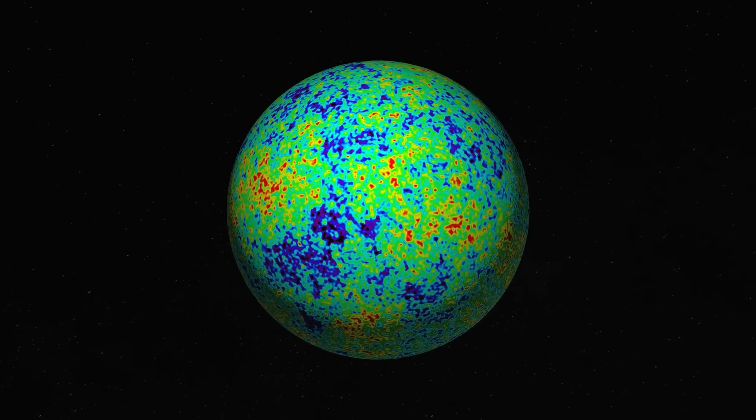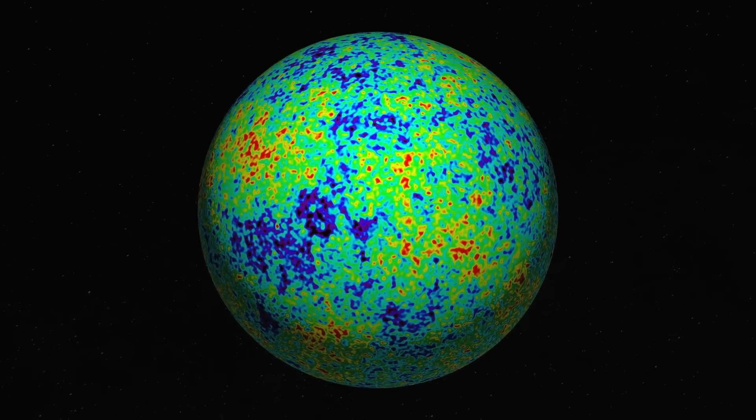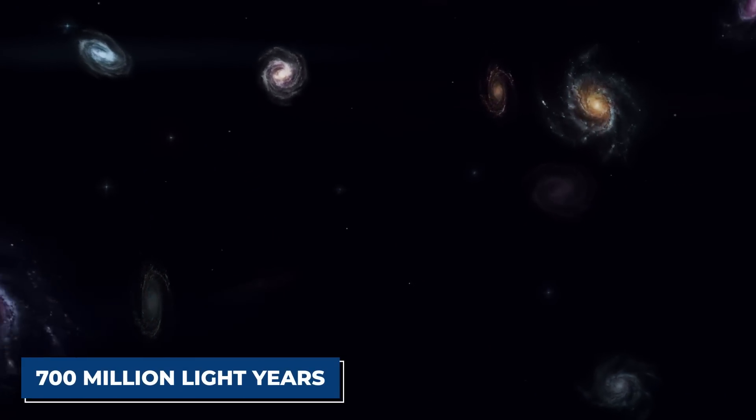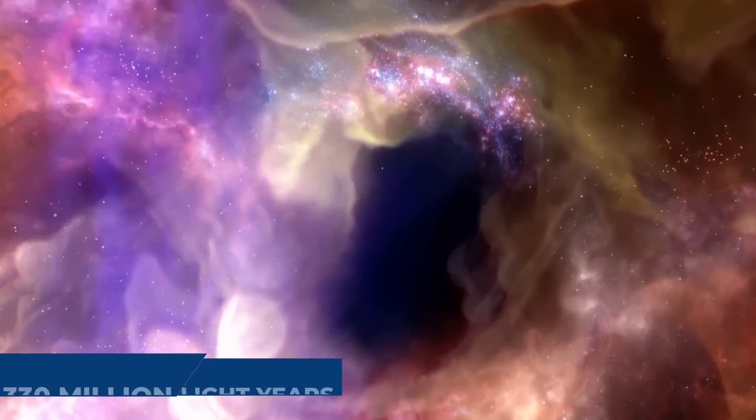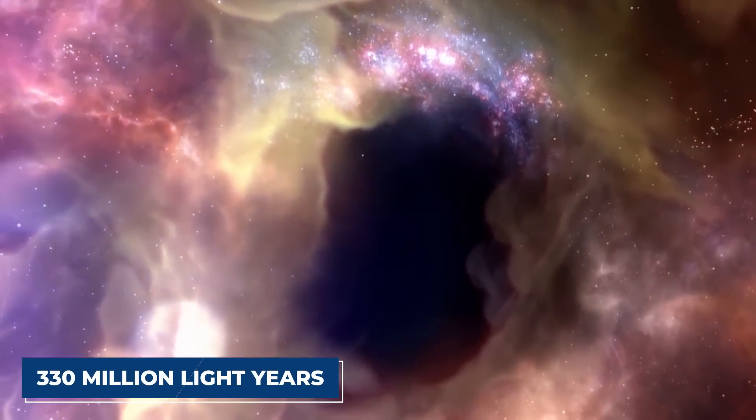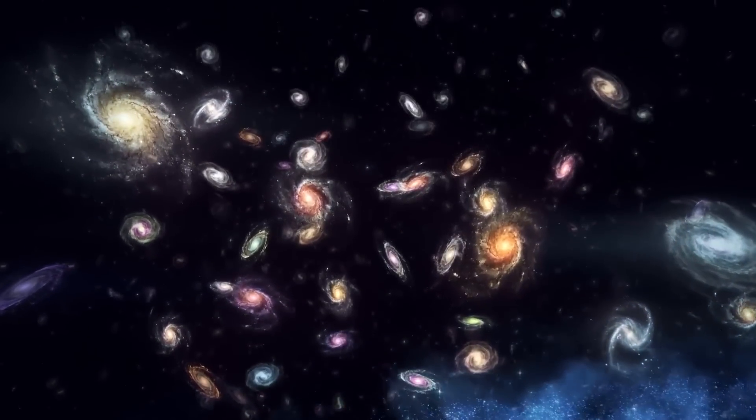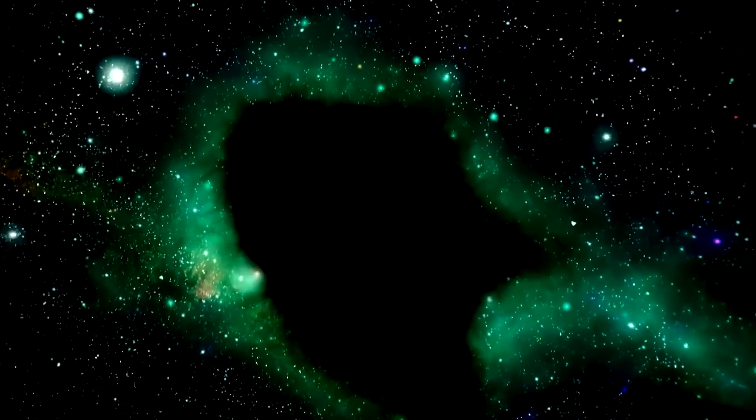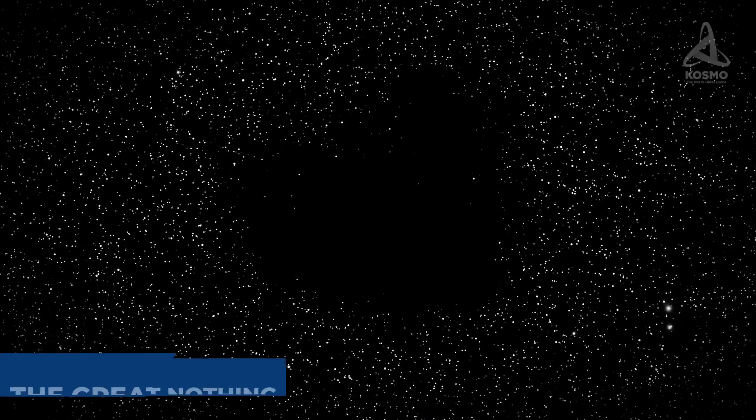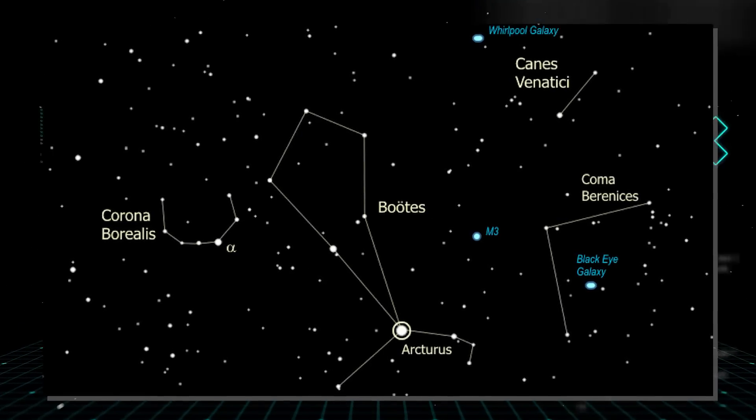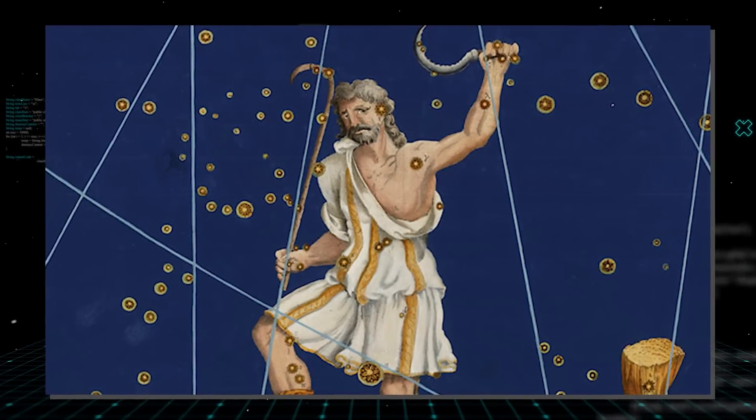As the map took shape, the scientists began to notice something strange, that 700 million light-years from Earth was a blank void. In a roughly spherical region around 330 million light-years wide, a region the Milky Way could fit into billions of times over, they found barely any galaxies. Initially, they called the region the Great Nothing, but later came to be known as the Boötes Void, as it appears to lie in the constellation of Boötes, the herdsman who drives the plow around the North Pole.